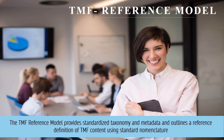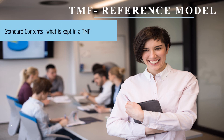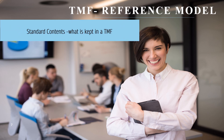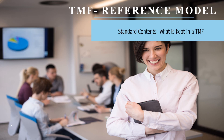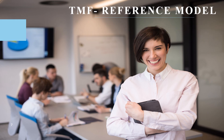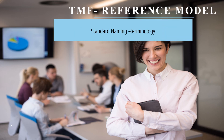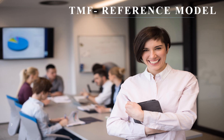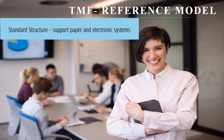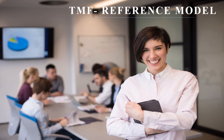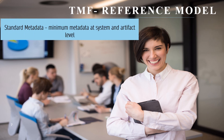The TMF reference model provides a standardized taxonomy and metadata and outlines a reference definition of TMF content using standard nomenclature. This model consists of four main areas. First, standard contents — this defines what is kept in a TMF. Second, standard naming — the naming terminology to be used for documents. Third, standard structure — meaning support for both paper and electronic systems. And fourth, standard metadata — meaning minimum metadata at the system and artifact level should be provided.